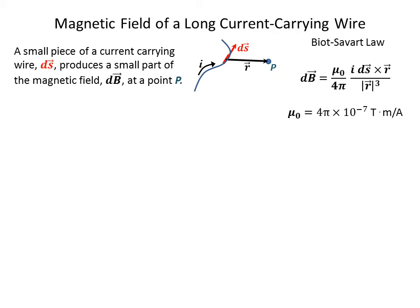There is a law known as the Biot-Savart law, which gives the B field in terms of these quantities. The dB vector is equal to mu zero over 4 pi times the current times the cross product of ds and r divided by the magnitude cubed of the r vector. Mu zero is known as the permeability, and it's equal to 4 pi times 10 to the minus 7 teslas meters per amp.